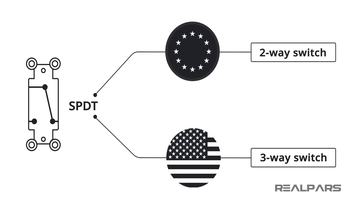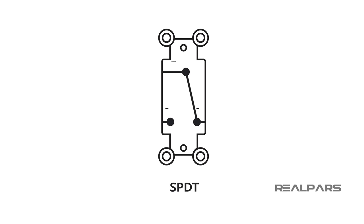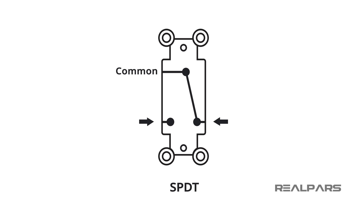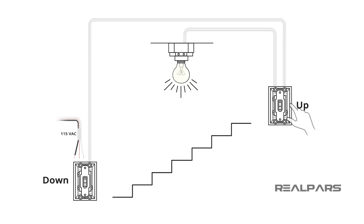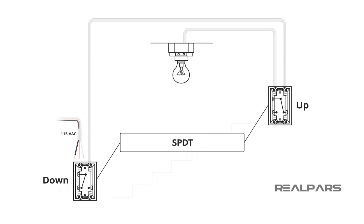Let's review what we've covered in this video. An SPDT is called a two-way switch in the European Union and a three-way switch in North America. An SPDT switch has three terminals — one wire in and two wires out. The input terminal is called common, and the output terminals are called normally open and normally closed. Turning a light on and off from two different locations requires a two-way switching circuit, which requires two SPDT switches.